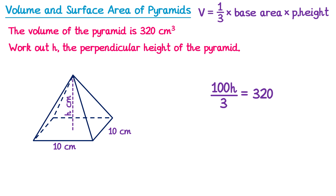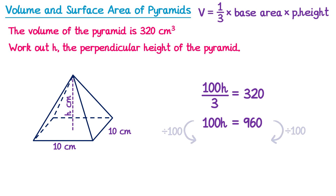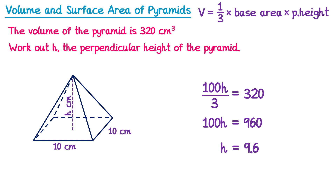So we end up with 100h over 3 equals 320. Multiply both sides by 3 — the 3s cancel on the left — so we just have 100h, and on the right-hand side 320 multiplied by 3 is 960. Then divide both sides by 100: 100h divided by 100 is just h, and 960 divided by 100 is 9.6. So h is 9.6 centimetres.